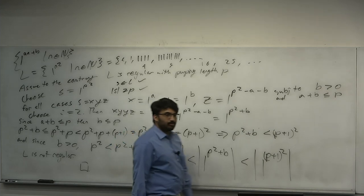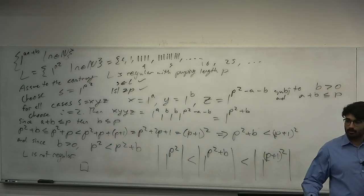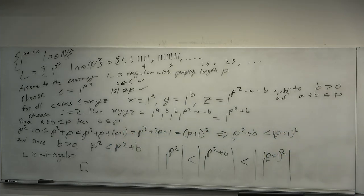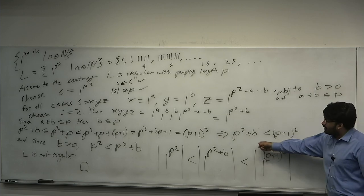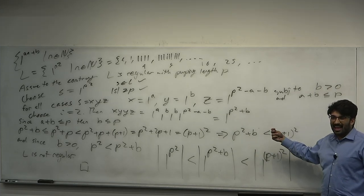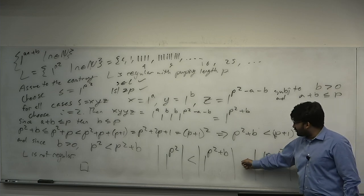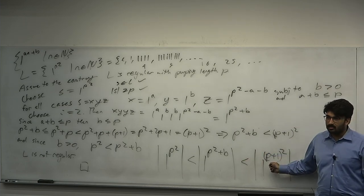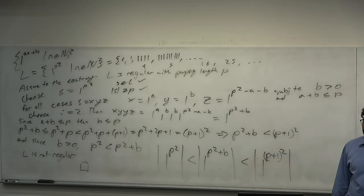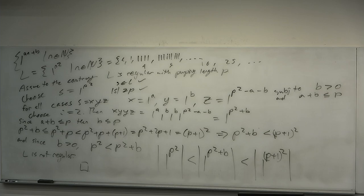Questions on that proof? The unary proof is a little interesting. You could generalize that proof to n³, n⁴, 2^n — anything where adding a linear amount to the pumped string doesn't get you to the next element of the language. Things like n factorial — whatever. The key insight is that adding a bounded linear amount b ≤ P is insufficient to jump to the next element.